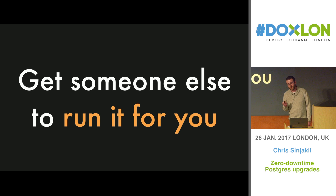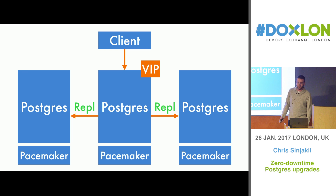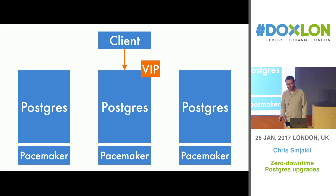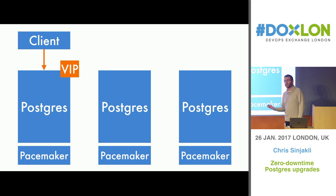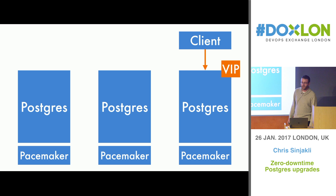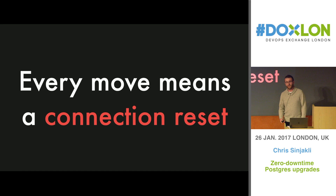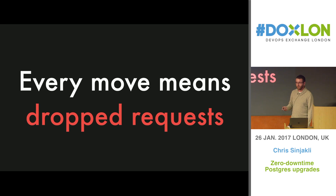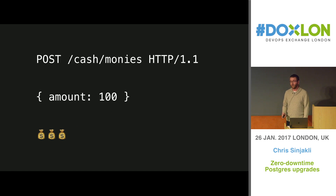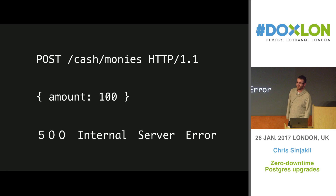So back to the point of the talk: what happens when we want to move on to zero downtime upgrades? We can use this virtual IP address to move clients to whichever node we've promoted to primary. But there's an issue from the clients' point of view. Every time you move the VIP, all the connected clients get a connection reset down the wire from the Linux kernel, which means they all see a connection reset and drop the requests that are currently being handled. Every move means we turn our API into this — which we don't want.